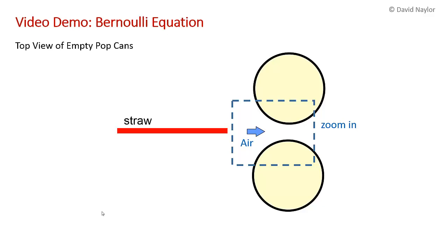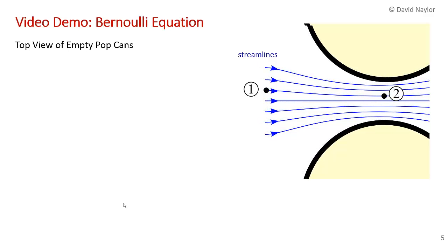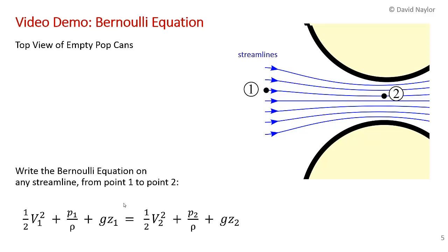So we're going to consider the flow as it constricts between the two cans. And so I've drawn the upper and lower can here in yellow and the streamlines. So you can see the streamlines constricting, moving into a higher velocity region between the two cans. And so what we can do is we can pick arbitrarily any streamline and write Bernoulli's equation from point 1 to point 2. And that's what I've done here.